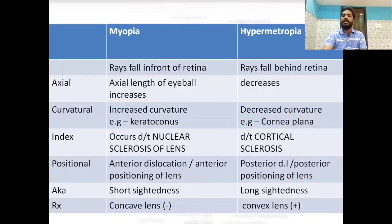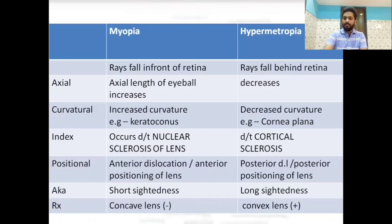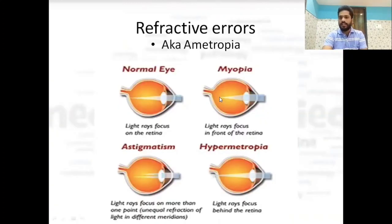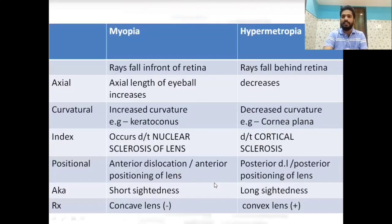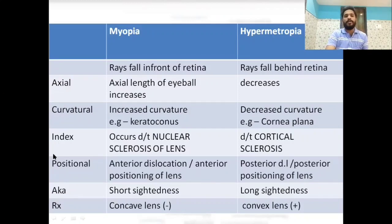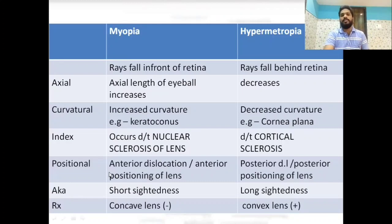Difference between myopia and hypermetropia: in myopia the ray of light falls in front of the retina, whereas in hypermetropia it falls behind the retina. Both are further divided into axial, curvature, index, and positional types. Myopia is short-sightedness; hypermetropia is long-sightedness.